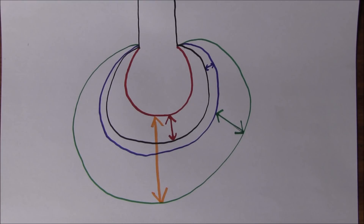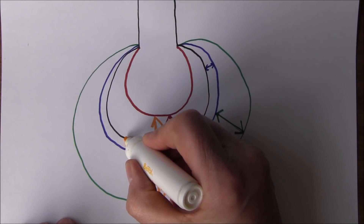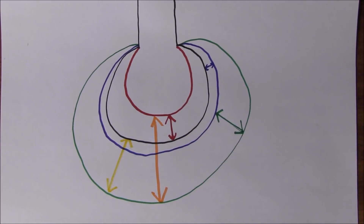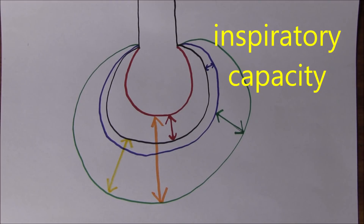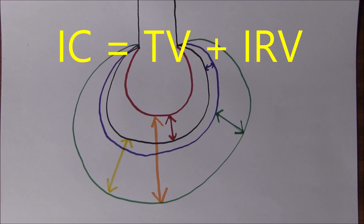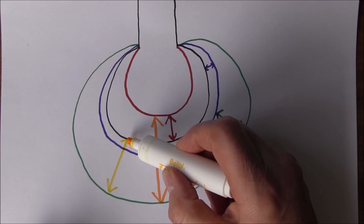Another figure is the inspiratory capacity — from when we normally stop breathing out during tidal ventilation, all the way to the maximum inhalation capacity. The inspiratory capacity can be calculated by adding the inspiratory reserve volume to the normal tidal volume.